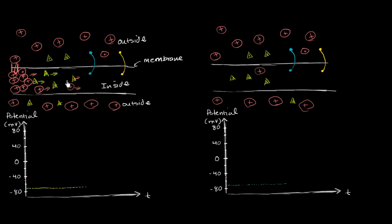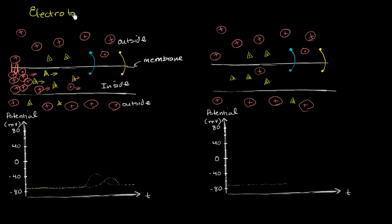After some time, because more and more positive charges are trying to get away from these others, as the concentration of positive charges spreads out, you're going to see the voltage start to increase and then return to equilibrium. And if you go a little further down the neuron, a little more time will pass before you see a voltage increase, but the effect will be more limited — you won't see as much of a bump in voltage. This type of spread is called electrotonic spread, or the spread of an electrotonic potential.